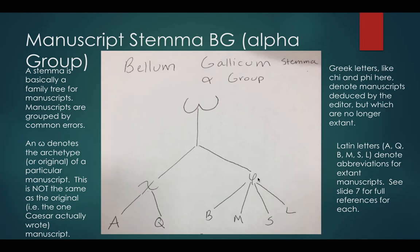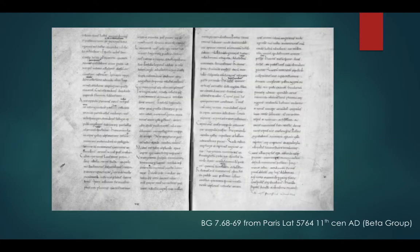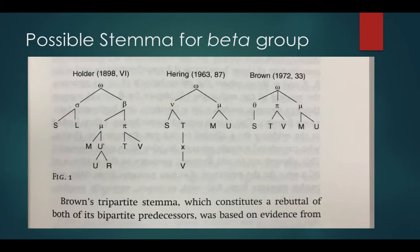Now, with the alpha group — which remember, is important because it has only the Gallic Wars — and the beta group, which has the Civil Wars, which Caesar also wrote, and then the Alexandrian Wars, the Spanish War, and the African War, which other people wrote. That beta group — no one has ever really agreed upon what it really looks like, and we all sort of just follow what Virginia Brown came up with in 1972.